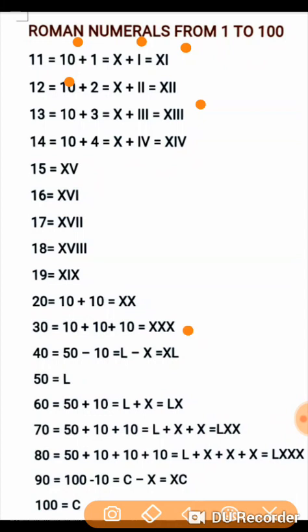30 can be shown as 10 plus 10 plus 10, which is X plus X plus X, written as XXX. Since X is already repeated 3 times, we cannot use X again for 40. So 40 is written as 50 minus 10. 50 is represented by L and 10 by X, giving L minus X. Since there is a minus sign, X is written before L, so 40 becomes XL.